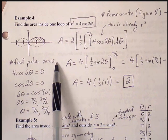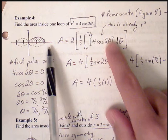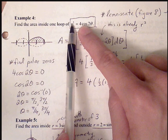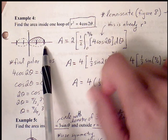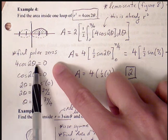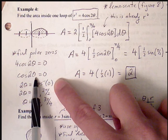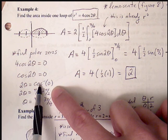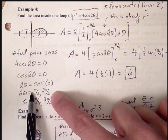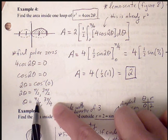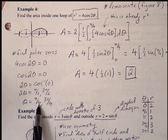We can sketch this out. If I choose theta equals 0, I get the square root of 4, so r equals 2. Then we find our polar zeros by setting 4 cosine of 2 theta equal to 0. Divide by 4: cosine of 2 theta equals 0. Taking the inverse cosine, cosine is 0 at pi over 2 and 3 pi over 2. Dividing by 2, the first polar zero is at pi over 4.